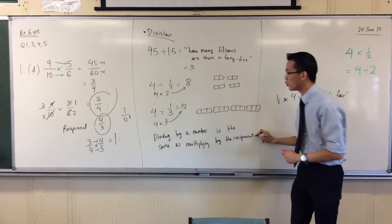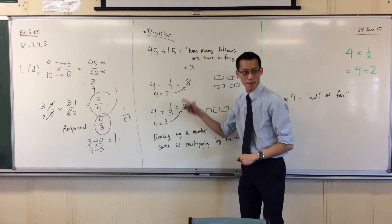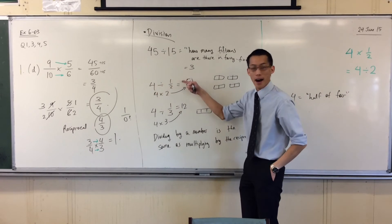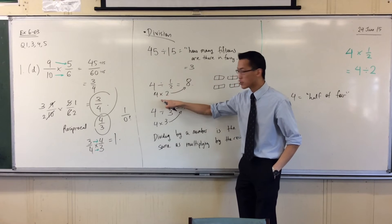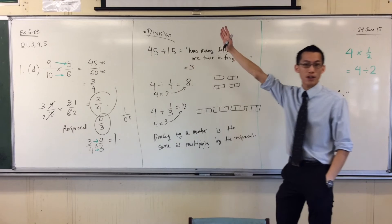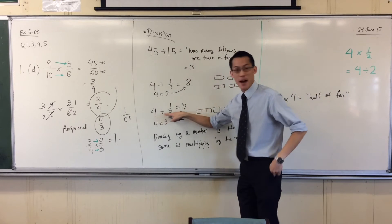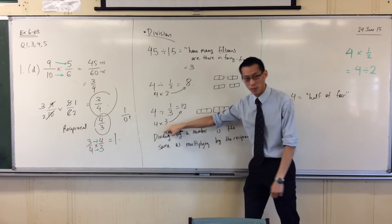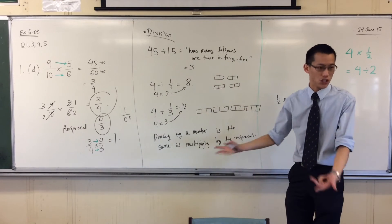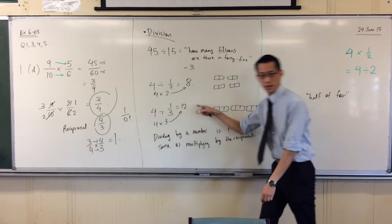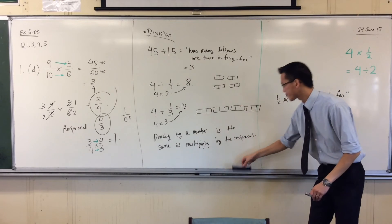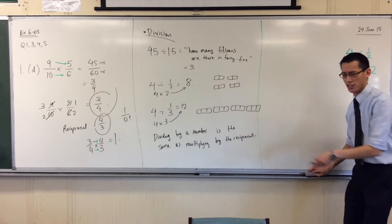So instead of saying, wonder how many halves there are in 4, let's draw it and divide it up — I can go straight to saying that 4 divided by a half is 4 multiplied by the reciprocal of half, which is 2. Straight to 8. 4 divided by a third is 4 multiplied by the reciprocal of a third, which is 3. So 4 times 3 goes straight to 12.